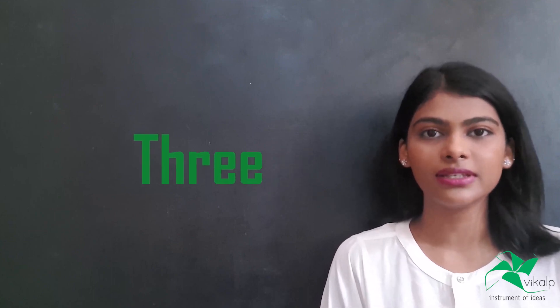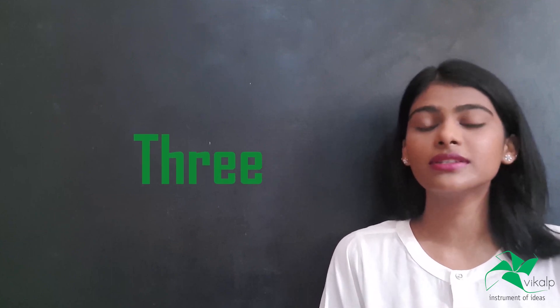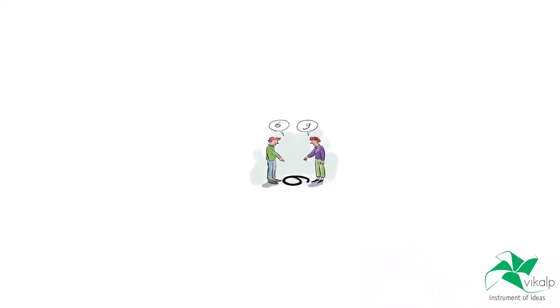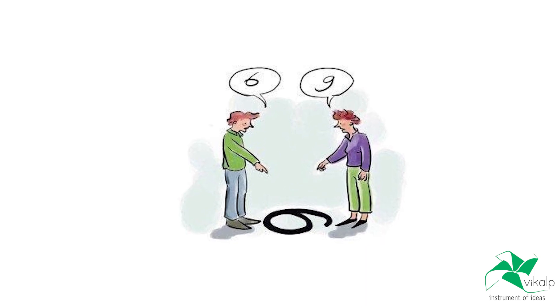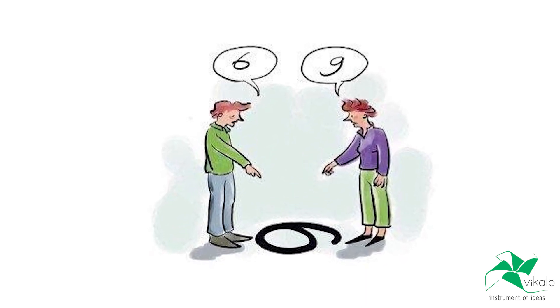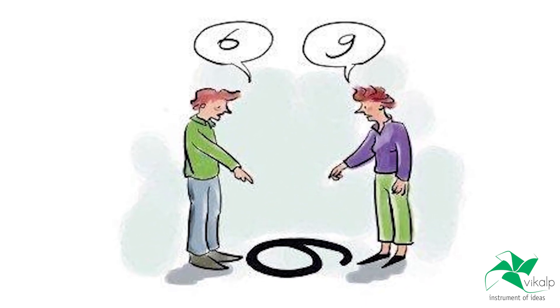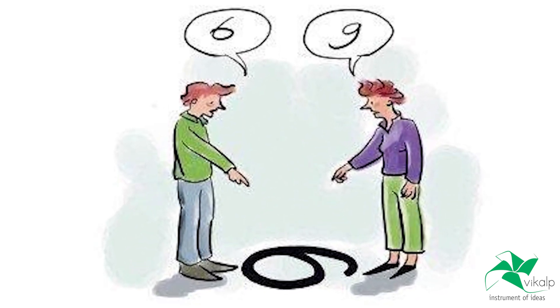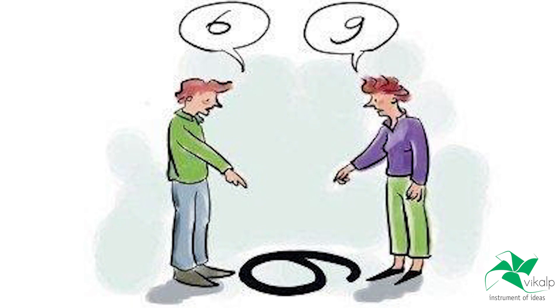For example, children are able to identify the symbol of number three, but what three means is often not clear to a child. It becomes more obvious in the case of six and nine, as they look very similar — in fact, exactly the same if two children are seeing it from opposite directions.